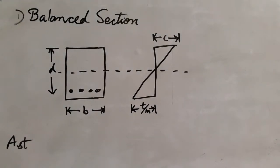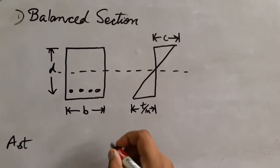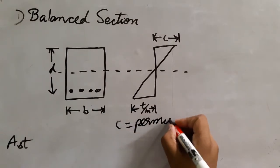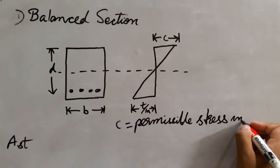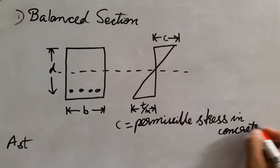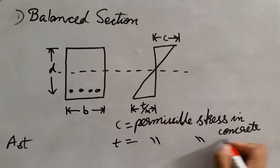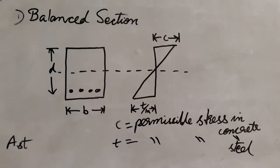This is the permissible stress in concrete and permissible stress in steel. Permissible stress in concrete — sigma c — and permissible stress in steel. In a balanced section, both permissible stresses in concrete and steel can be developed simultaneously.